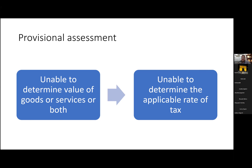Let's say E-vehicles have a classification issue of whether they attract 5% or 18% GST rate. If you're unable to determine whether you're required to pay 18% or 5% GST on sale of vehicles, you can go to your proper officer and apply to pay tax provisionally. When you file an application to pay tax provisionally, the proper officer has to allow that request within 90 days. And within six months of the application, the assessment order has to be passed, wherein he will determine the correct value or rate of tax.